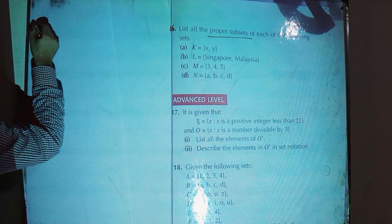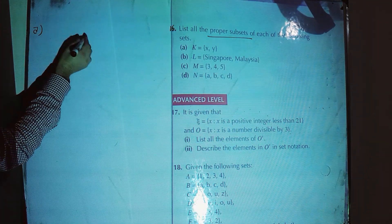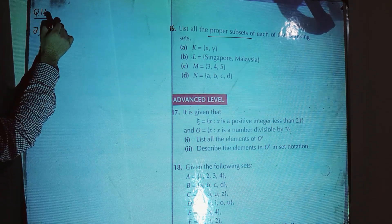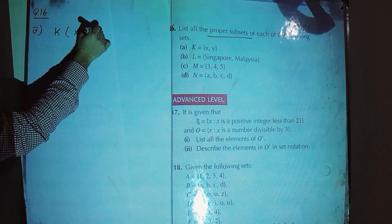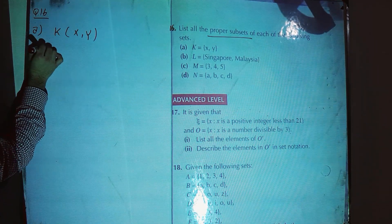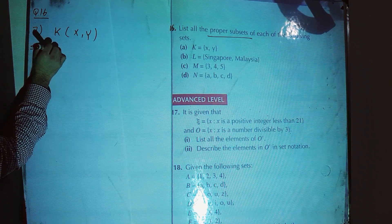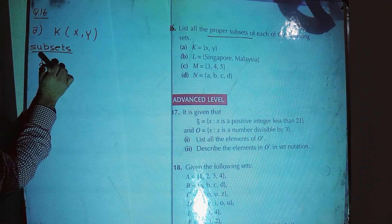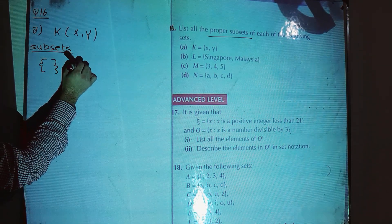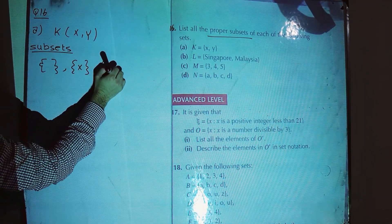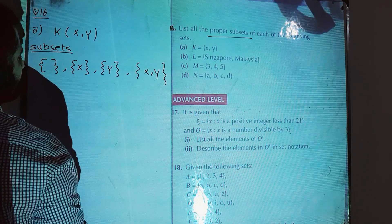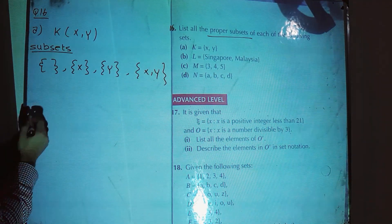For part A, question 16, let K = {x, y}. If we are going to make all subsets of K, we have: empty set, then {x}, then {y} — subsets with single element — and then {x, y}. These are all the possible subsets of K.